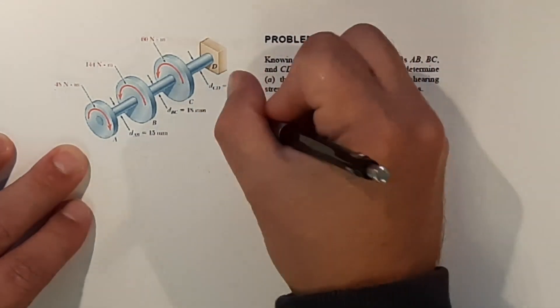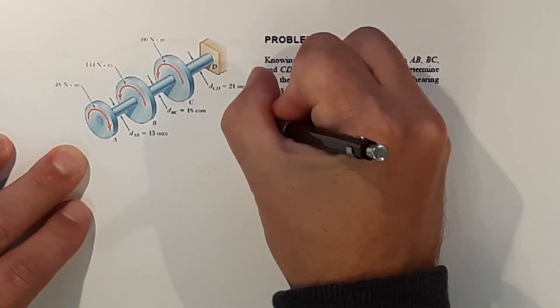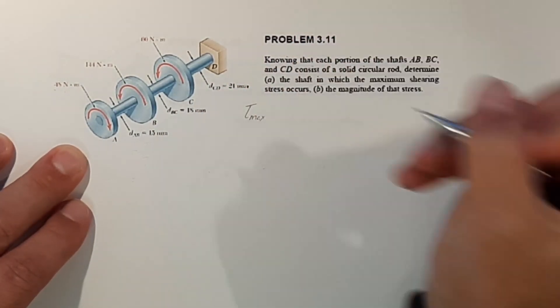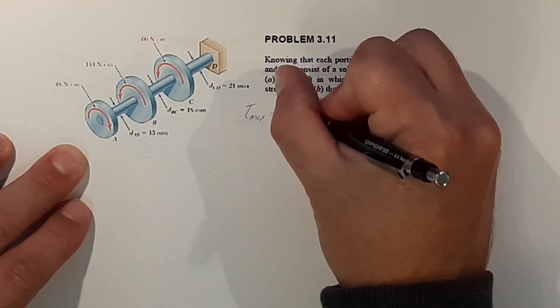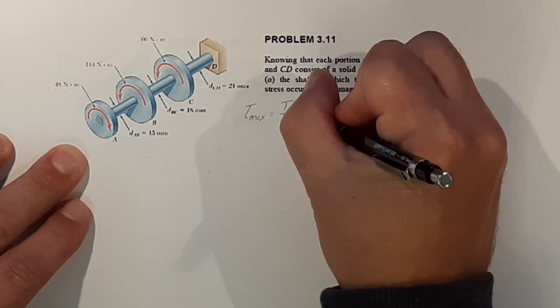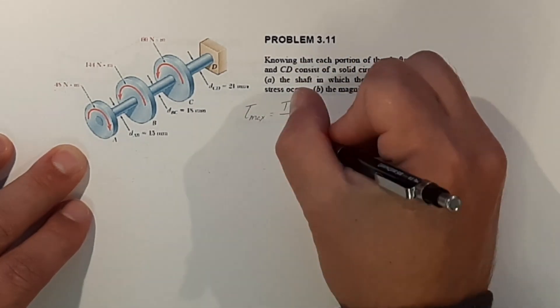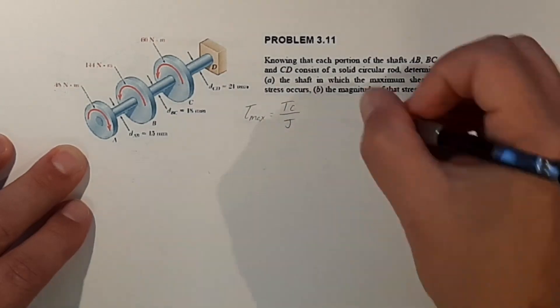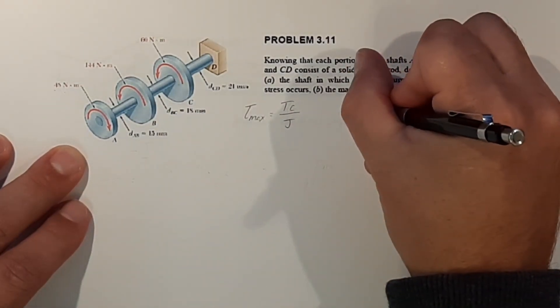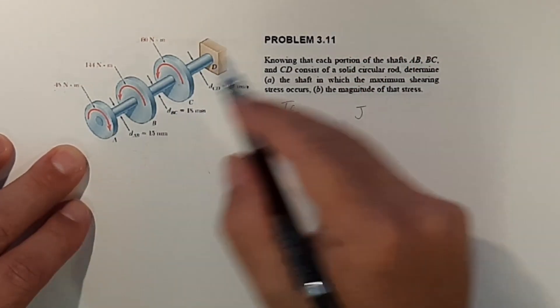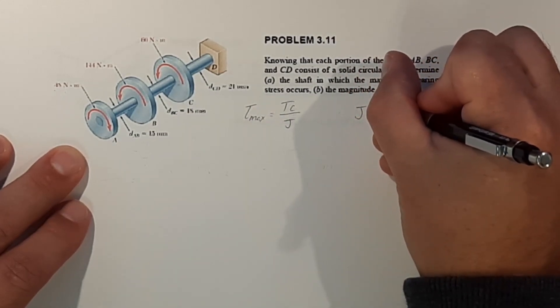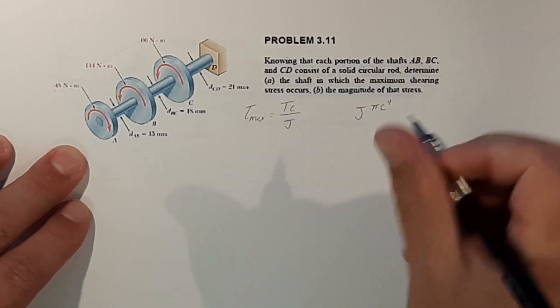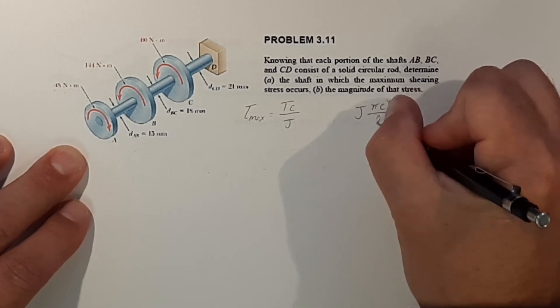We know that the maximum shearing stress that occurs is equal to the torque times the radius C over J the moment of inertia. We know the moment of inertia of a solid cylindrical rod is equal to pi times C the radius to the fourth over 2.